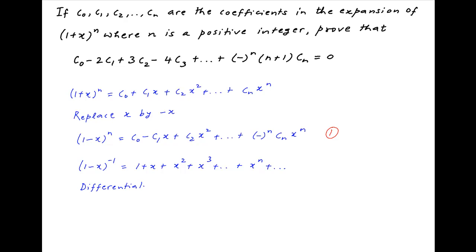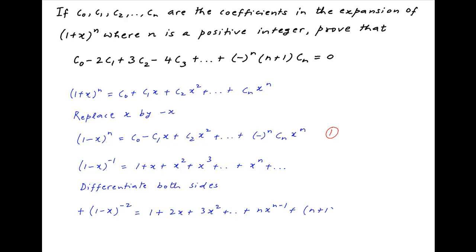Now differentiate both sides with respect to x. The derivative of the left hand side is equal to -(1 - x)^(-2) * (-1), and the derivative of the right hand side is equal to 1 + 2x + 3x^2 + ... + n*x^(n-1) + (n+1)*x^n + and so on.